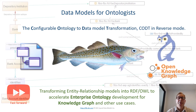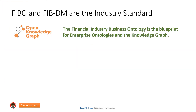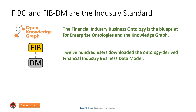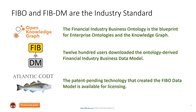I give a short overview of the configurable ontology to data model transformation COD in reverse mode. With COD in reverse, you can transform entity relationship models into RDF-OWL, and by doing so you accelerate your design of the enterprise ontology for knowledge graph and other use cases. The FIBO and FIB-DM are the industry standard. The EDM Council now markets the FIBO as the open knowledge graph — it's a blueprint for enterprise ontologies and the knowledge graph. 1200 users already downloaded the ontology-derived financial industry business data model. The patent-pending technology that created the FIBO data model is available for licensing.